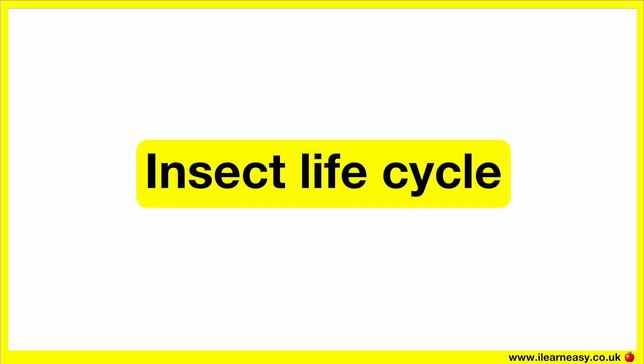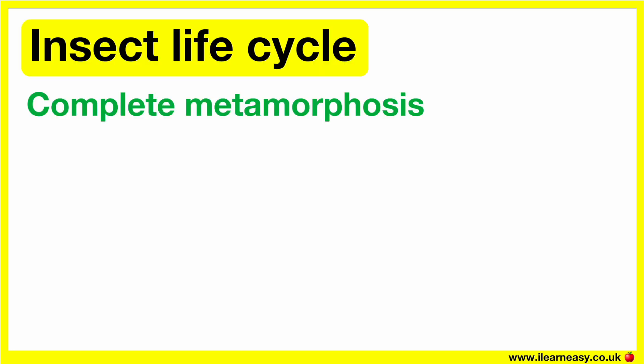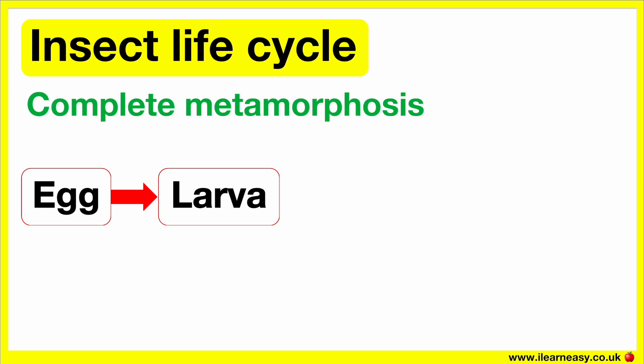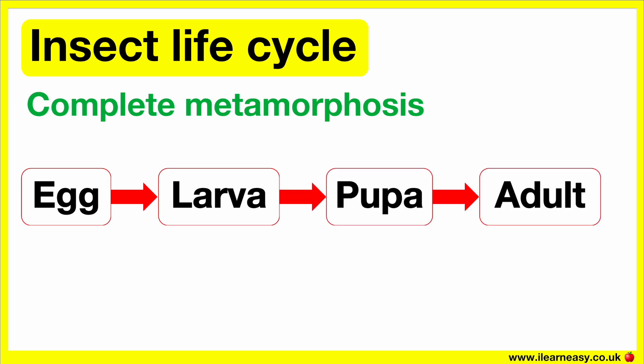Insects can go through two types of life cycles: complete metamorphosis or incomplete metamorphosis. Complete metamorphosis consists of four stages: egg, larva, pupa, adult.